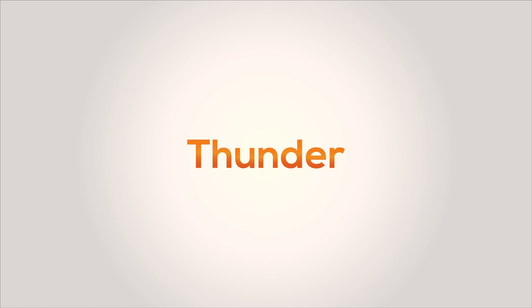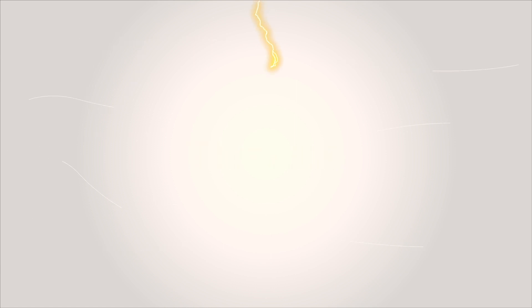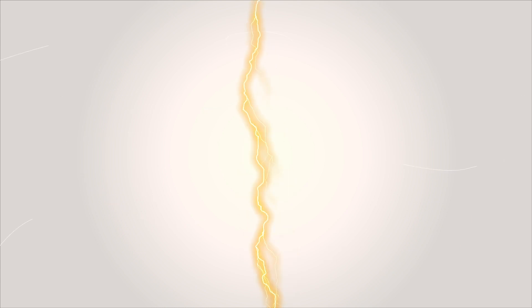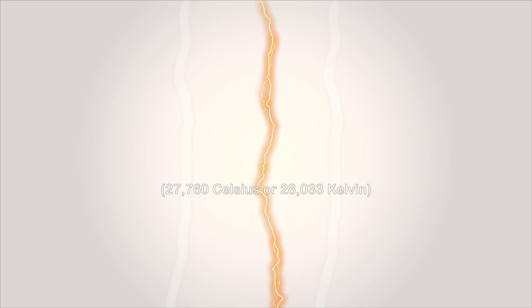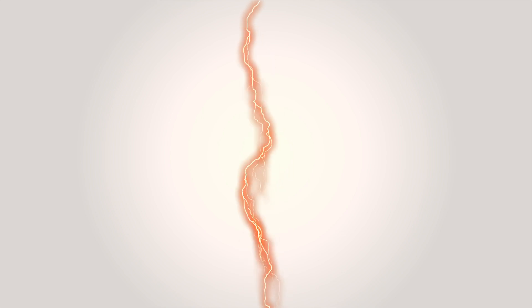Thunder is created when lightning passes through the atmospheric air. The lightning discharge heats the air around it rapidly and causes it to expand. The temperature of the air in the lightning may reach as high as 50,000 degrees Fahrenheit. Immediately after the flash, the air contracts quickly. This rapid expansion and contraction is what creates the sound wave that we call thunder.